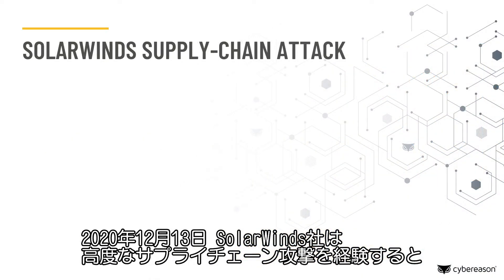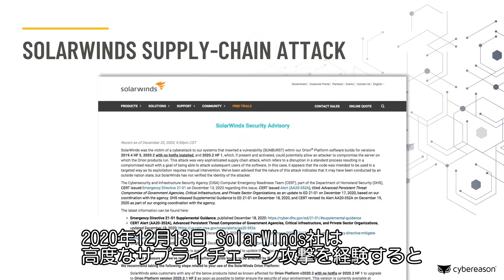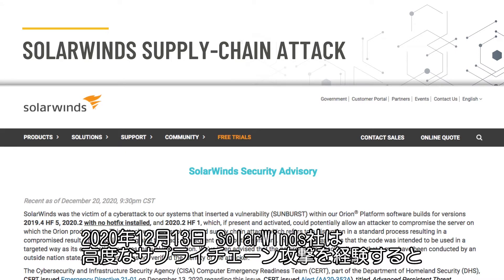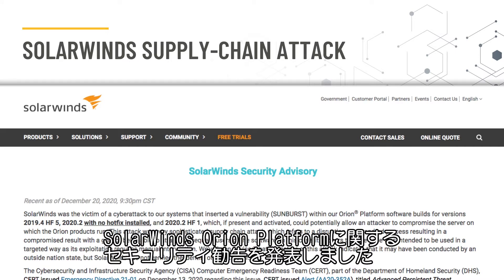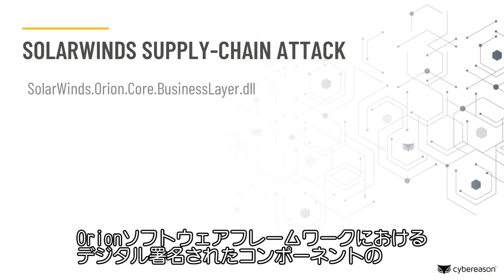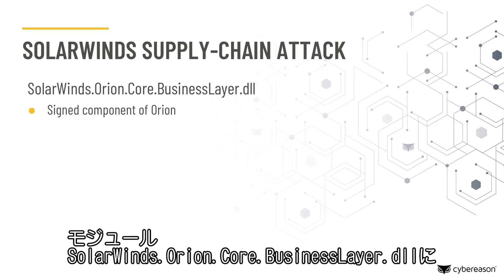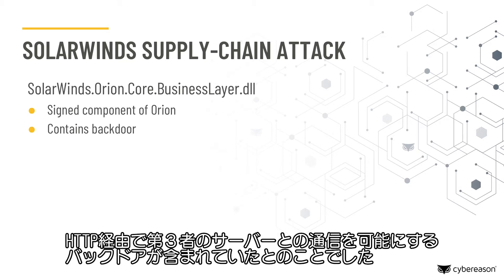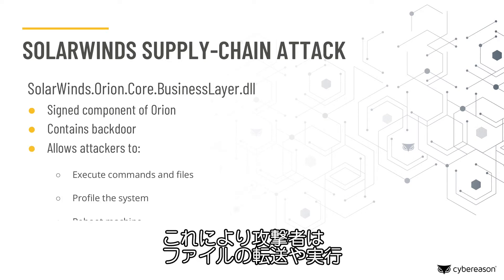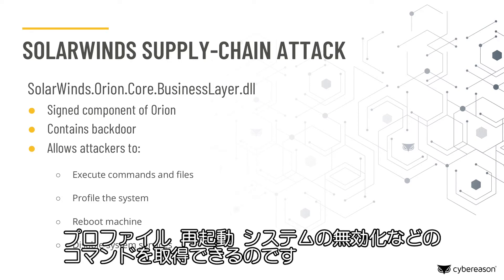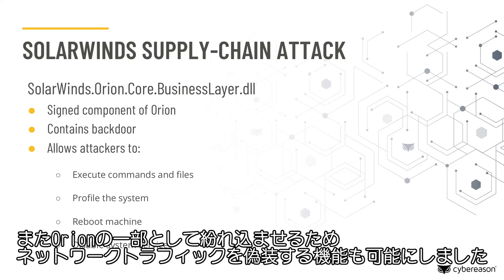On December 13, 2020, SolarWinds issued a security advisory regarding their SolarWinds Orion platform after experiencing a sophisticated supply chain attack. Specifically, the module solarwinds.orion.core.businesslayer.dll, a digitally signed component of the Orion software framework, contains a backdoor that allows communication with third-party servers via HTTP. The backdoor allows attackers to retrieve and execute commands that can transfer or execute files, profile the system, reboot the machine, and disable system services. It also has the ability to disguise network traffic in order to blend in as part of the Orion software.